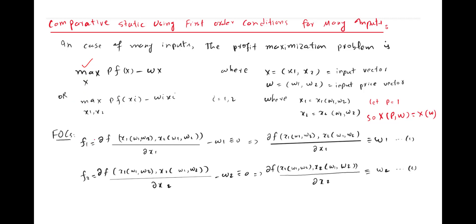We know that the factor demand function is a function of the price of output and the price of inputs. To simplify our analysis we assume p equals 1, so the factor demand function depends only on w. That is why x1 is a function of w1 and w2, since you are hiring two factor inputs — w1 is the price of factor 1 and w2 is the price of factor 2. The output price is normalized to 1 and is not reported separately. Similarly, x2 is also a function of w1 and w2.